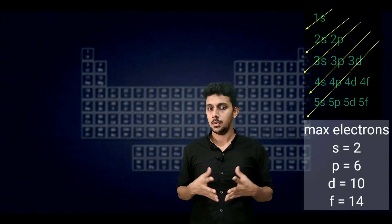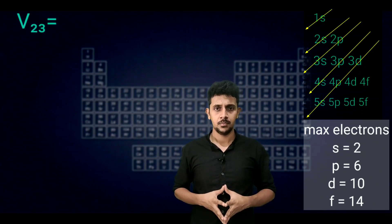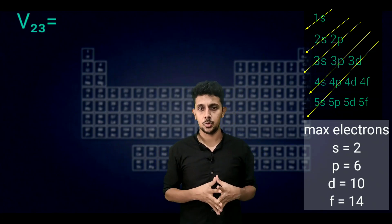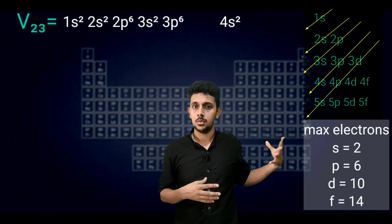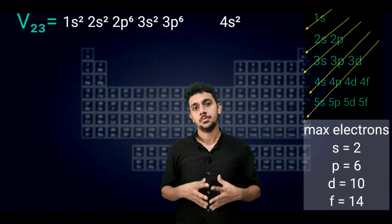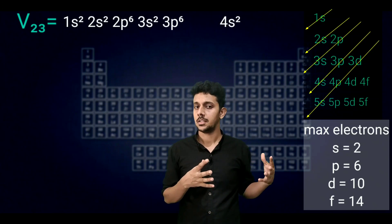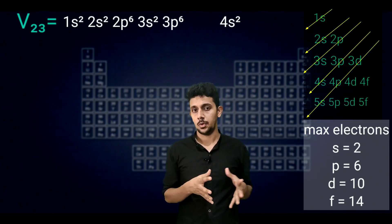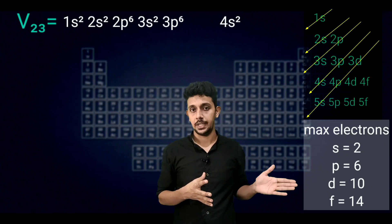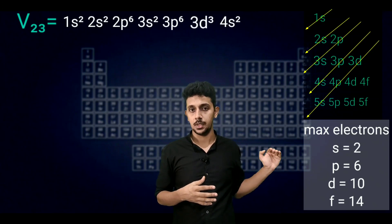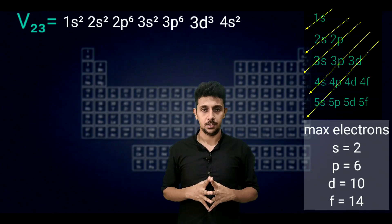Let's move to another example. Vanadium, atomic number 23. The configuration is 1s2, 2s2, 2p6, 3s2, 3p6, then 4s2, and the remaining electrons go into 3d3.